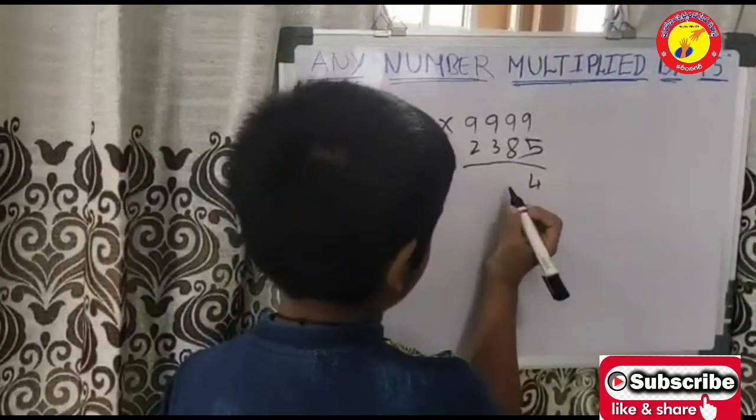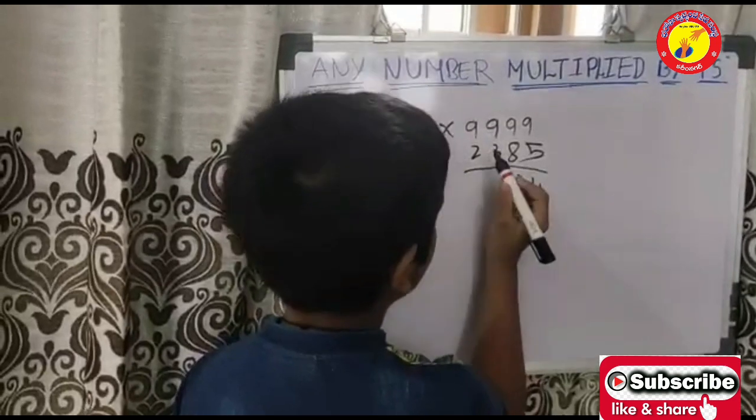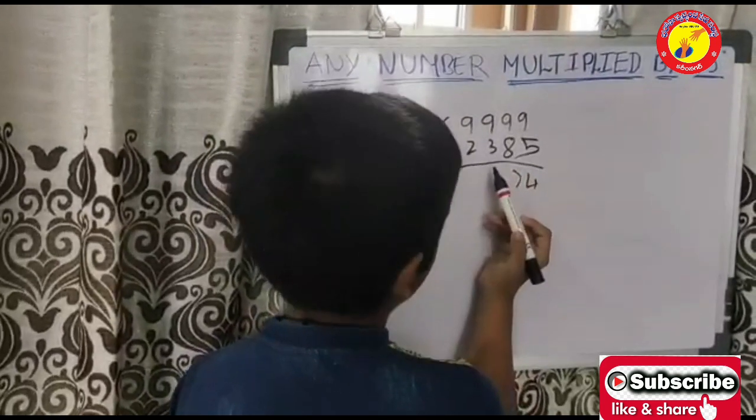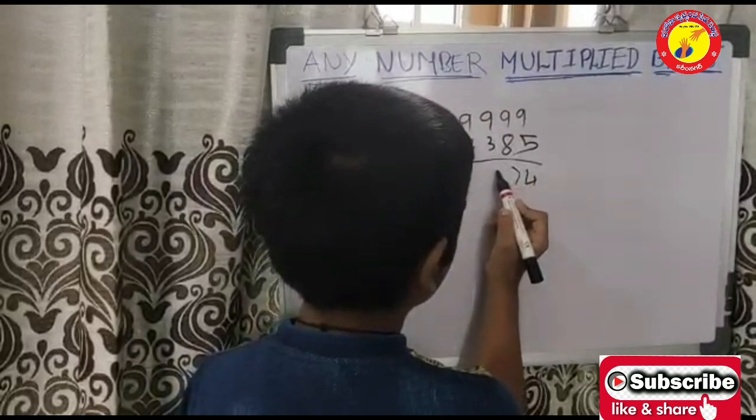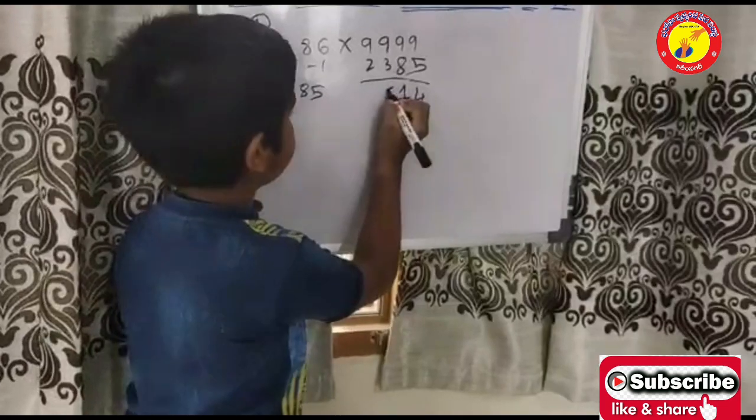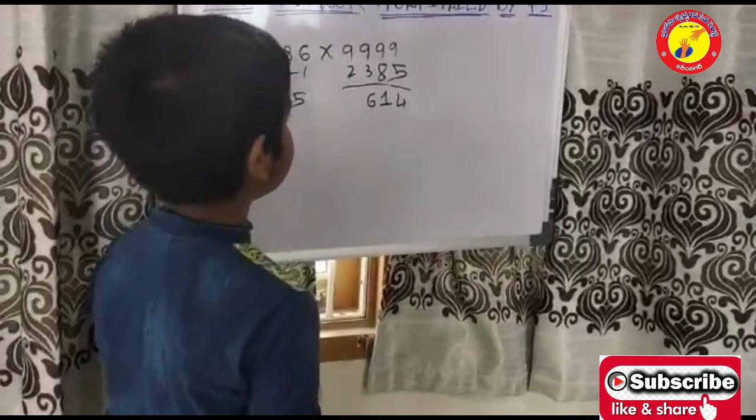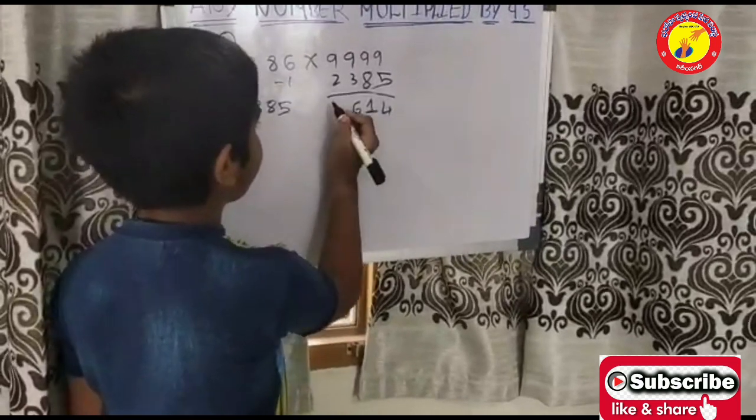9 minus 8 is equal to 1. 9 minus 3 is equal to 6. 9 minus 2 is equal to 3.